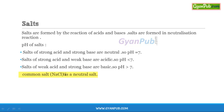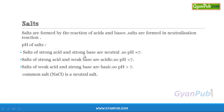We can give common salt as a neutral salt example. Common salt is formed by a strong acid like HCl and a strong base like sodium hydroxide. These strong acid and strong base combined together give a neutral salt, which is common salt, having a pH value approximately equal to 7.